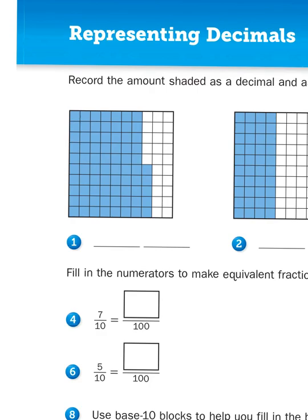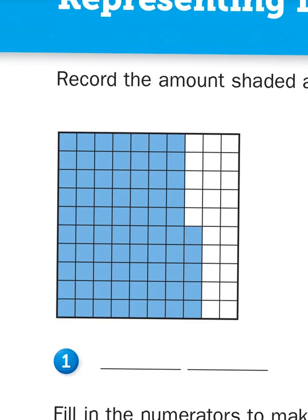So let's take a look. As you can see, I have 1, 2, 3, 4, 5, 6, 7 columns, so those are seven-tenths. And I have 1, 2, 3, 4, 5, I have five more hundredths.